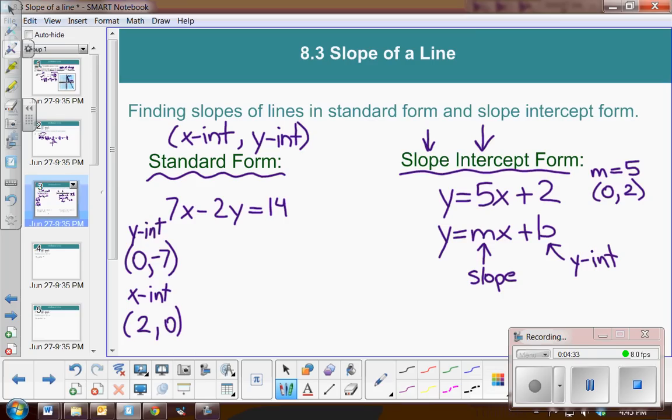So going back now to standard form, if I were to rewrite this equation so that it's y equals. So in other words, I have to solve for y. So if I subtract 7x from both sides, so now I have negative 2y equals negative 7x plus 14. And then I divide everything by negative 2.